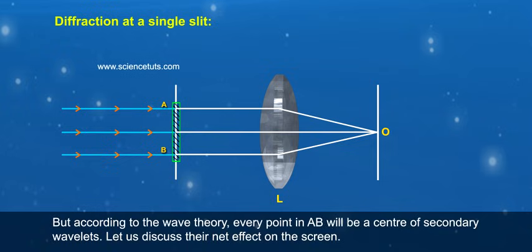every point in A-B will be a center of secondary wavelets. Let us discuss their net effect on the screen.